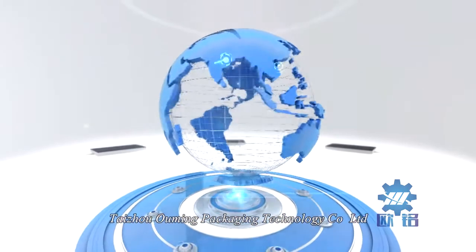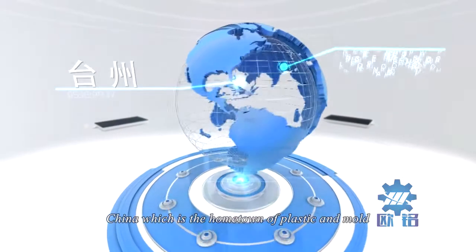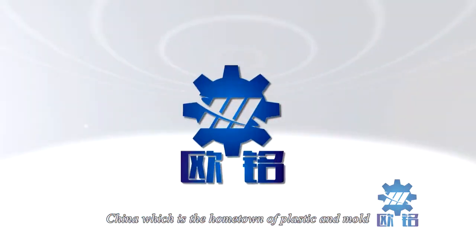Taizhou Ouming Packaging Technology Company Limited is located in Huangyan, China, which is the hometown of plastic and mold.